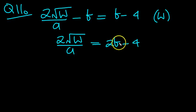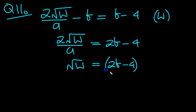Now we can move things around. Move the a up and the 2 down. So root w is equal to... The a goes from divide to times on the whole side, so it's 2b minus 4 times a. Then move the 2 from times down to divide at the same time. So there's root w.